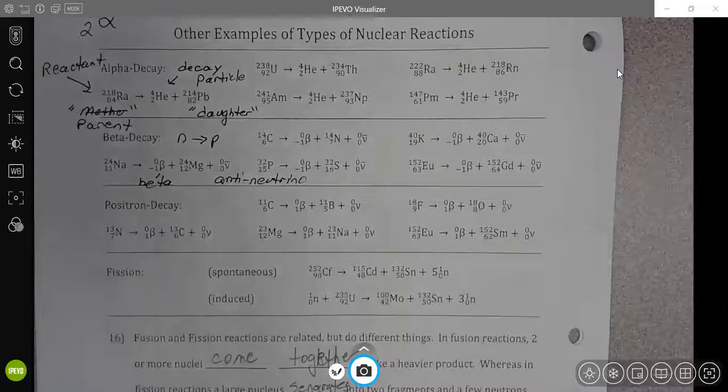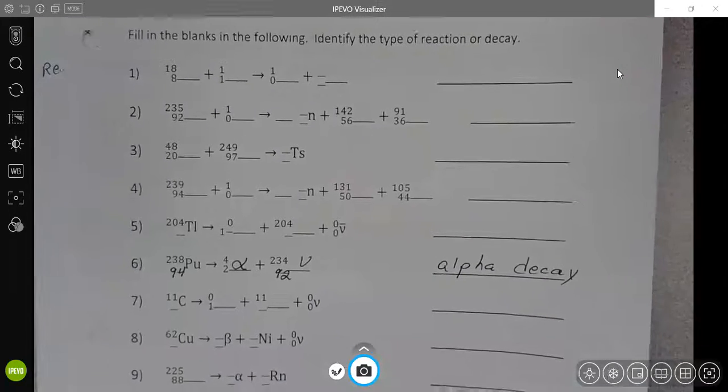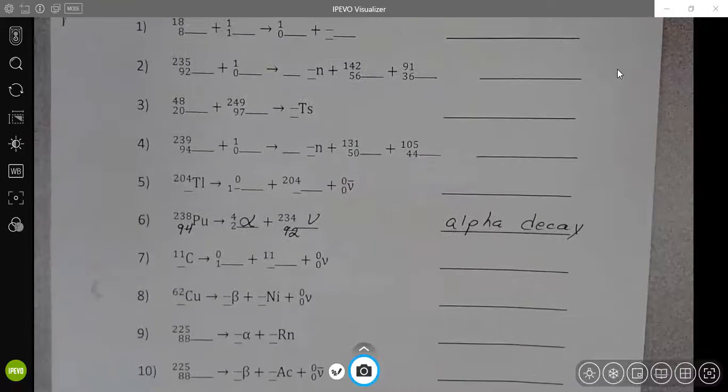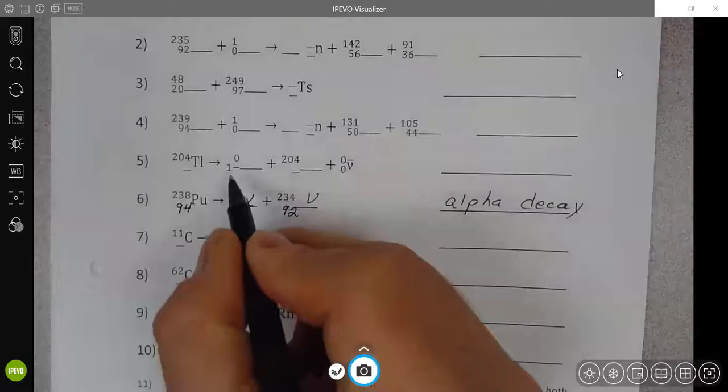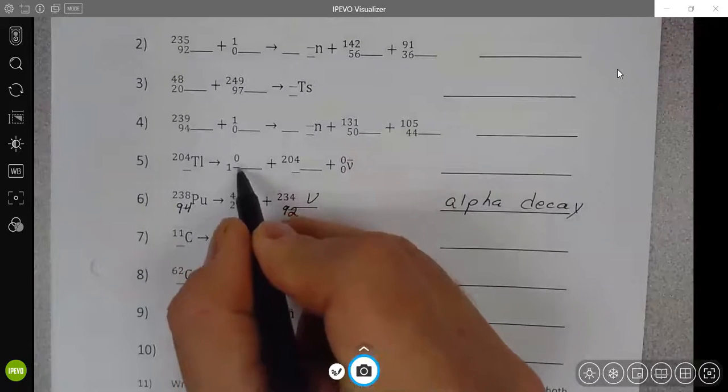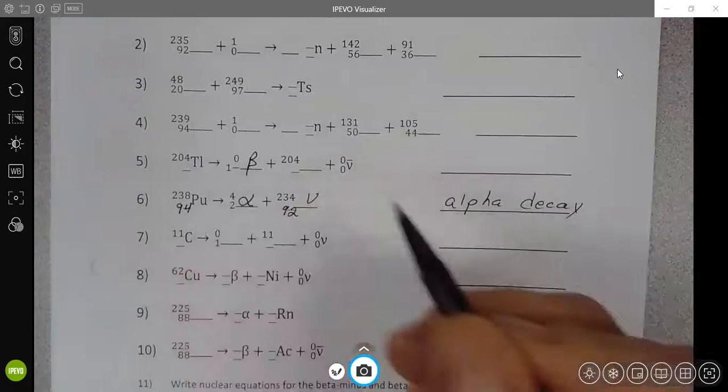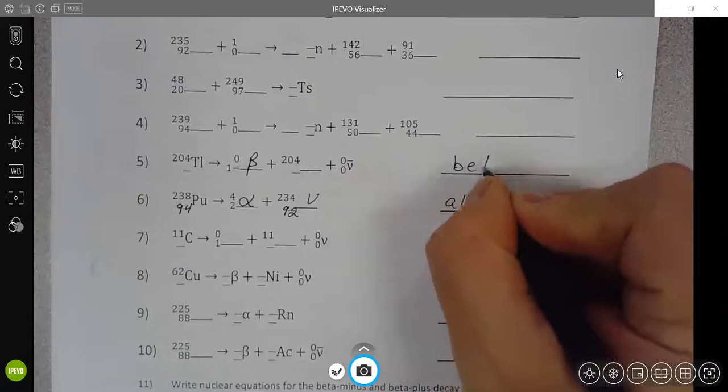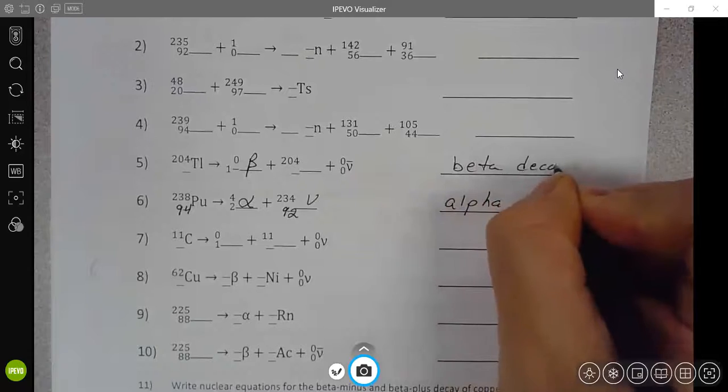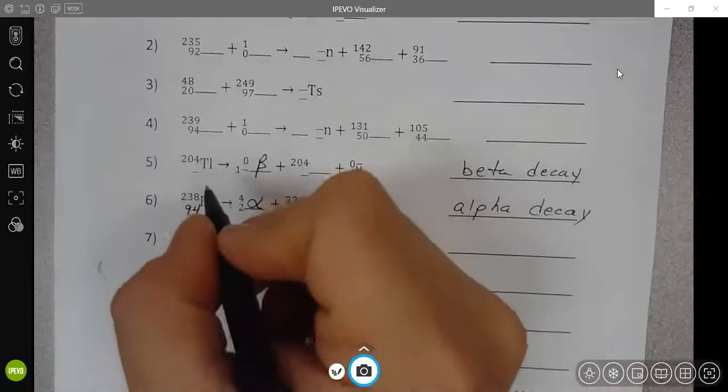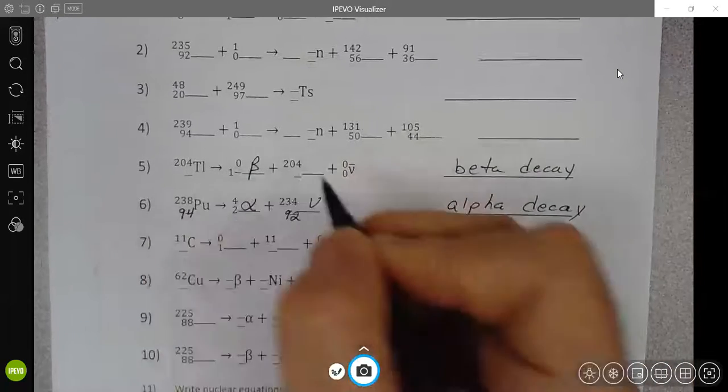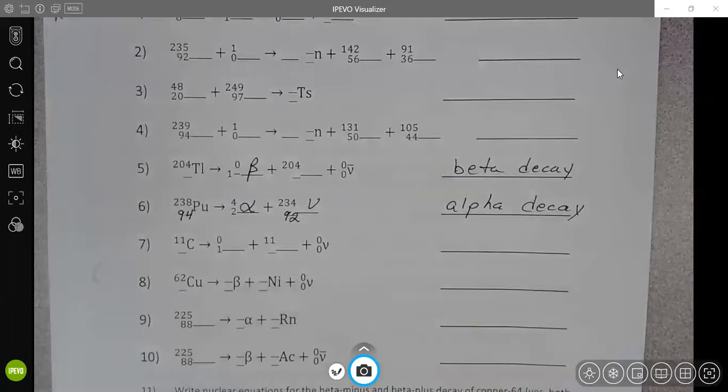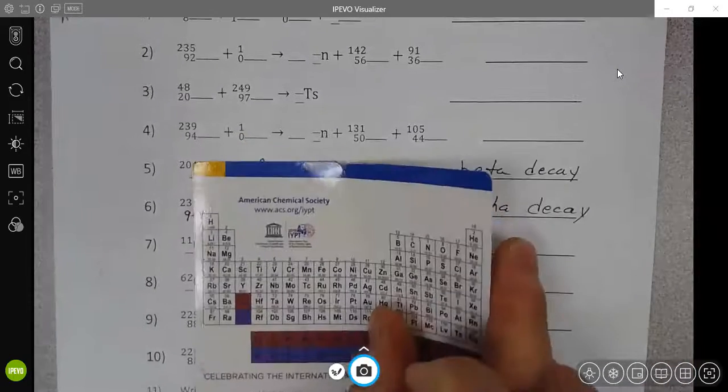So again, when you look at these reactions here, and I think I flipped the sign on one of these just to try to emphasize that it was negative, we see here this zero one minus. And so this is really trying to show us that that's a beta particle, and so this would be beta decay. In beta decay, there should be no change in the mass number, and then whatever the atomic number is should actually increase by one.